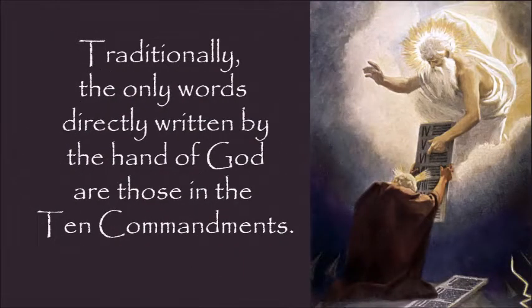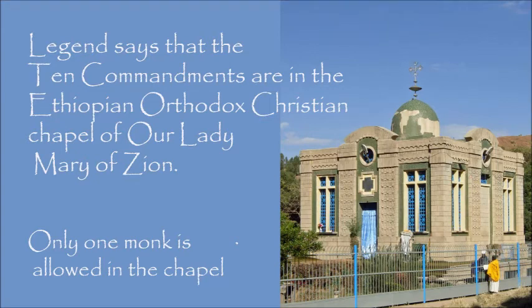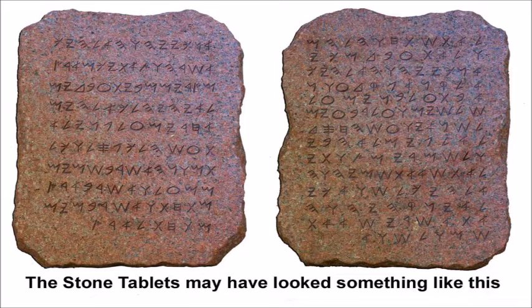According to tradition, the Ten Commandments were written directly on the stone tablets by the hand of God. Interestingly, the Ethiopian Orthodox Christian Church claims that they have the original stone tablets given to Moses. Unfortunately, the Ethiopian Church does not allow anyone to view these tablets. So, regardless of whether the tablets still exist or not, the only knowledge we have of the words that God himself put on the tablets is what has been written down by the hand of man.